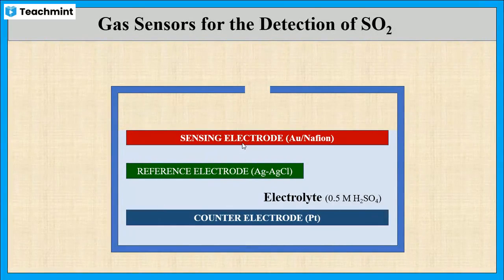And the last one is the counter electrode which is made up of platinum and is used to complete the circuit.